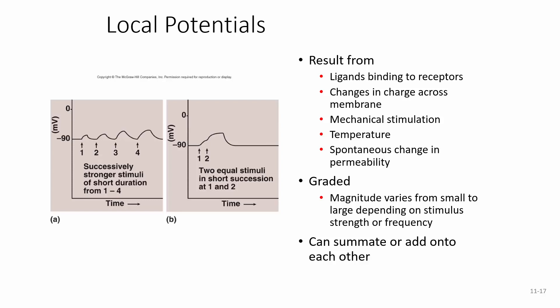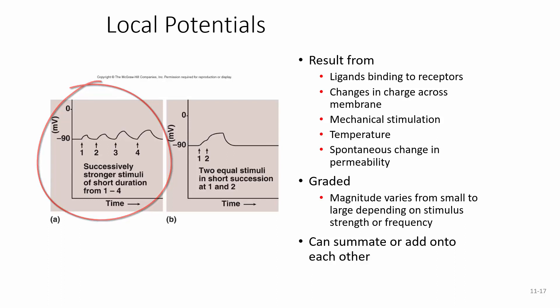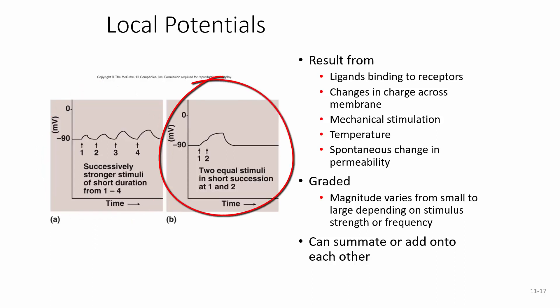Temperature is another cause — we have hot and cold receptors. When they reach a certain temperature, either hotter or colder, an action potential is propagated. We can even have a spontaneous change in permeability — you might have experienced this when your eye starts twitching. Local potentials can be graded: the magnitude varies from small to large depending on the stimulus strength or frequency, and they can also summate — add on to one another.